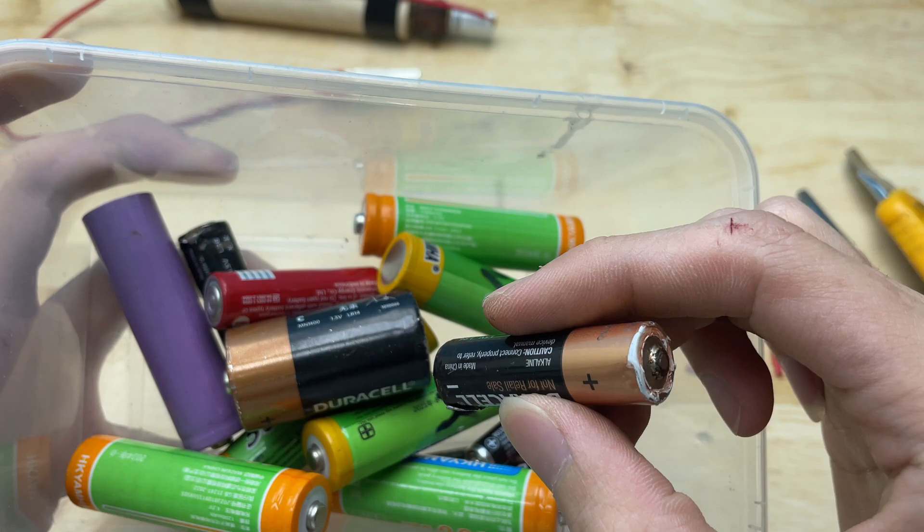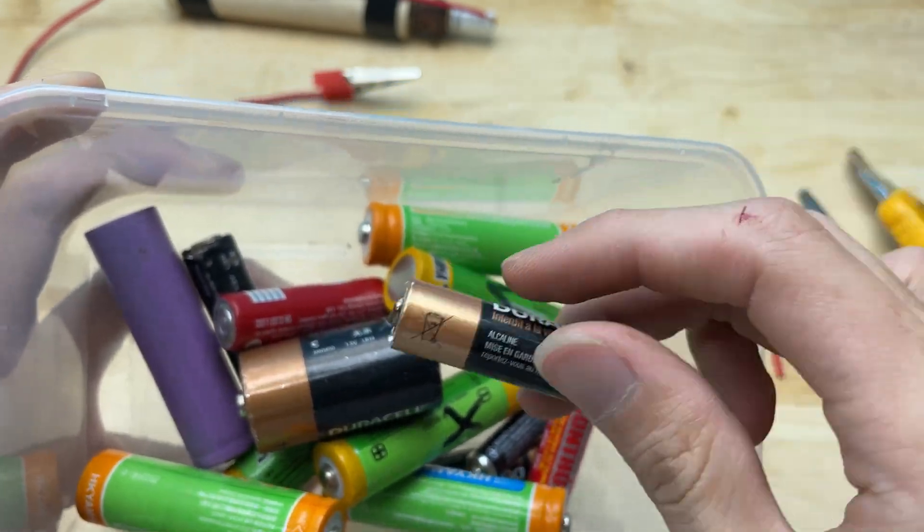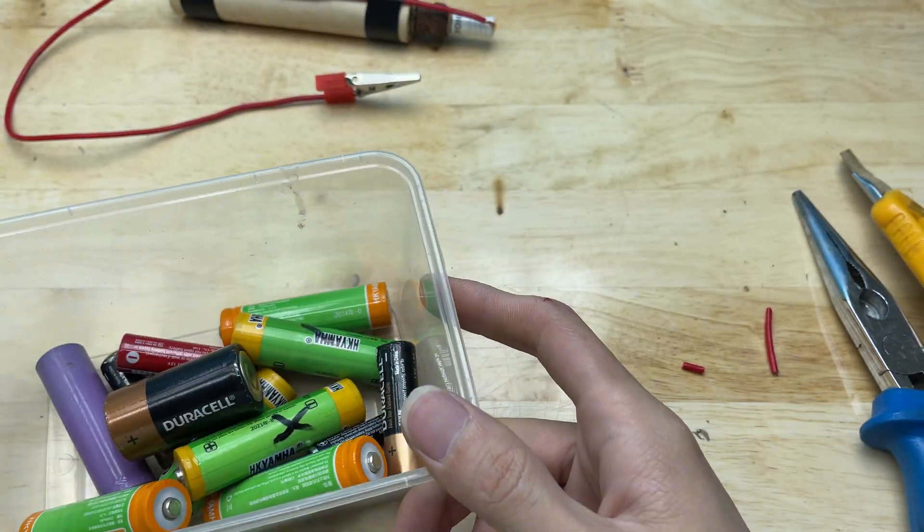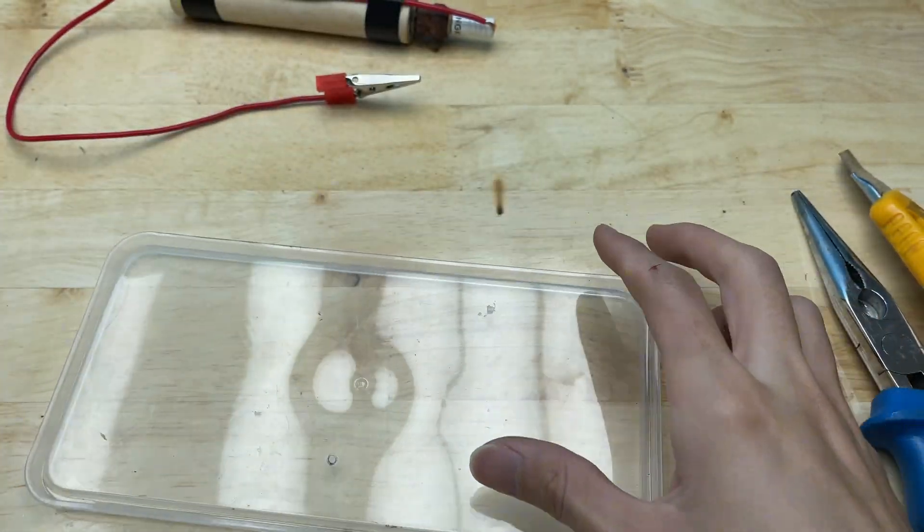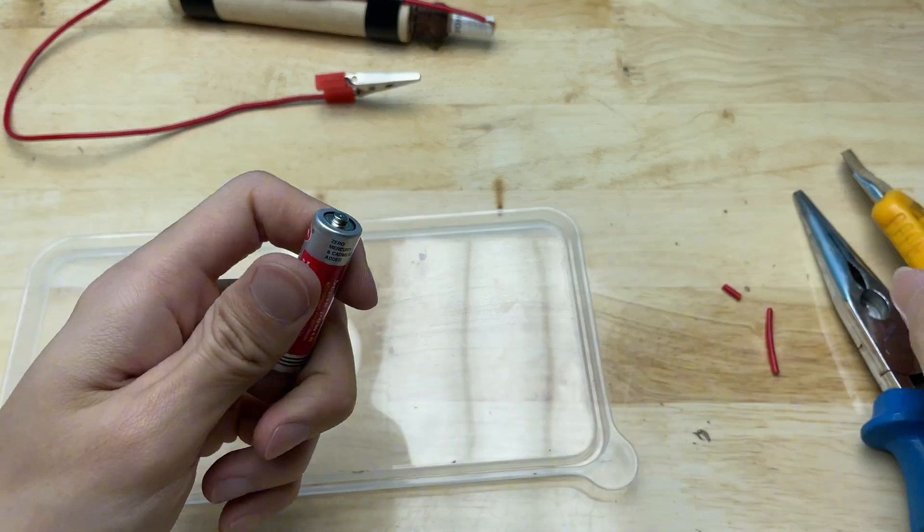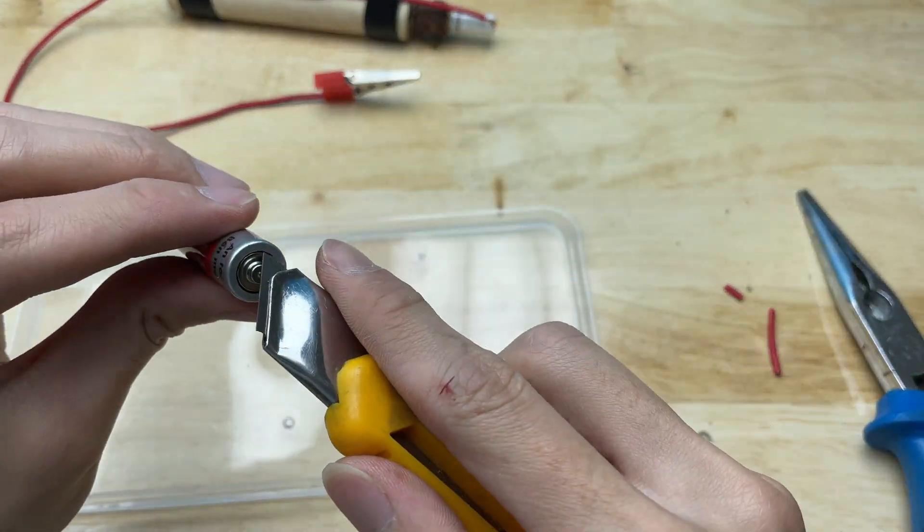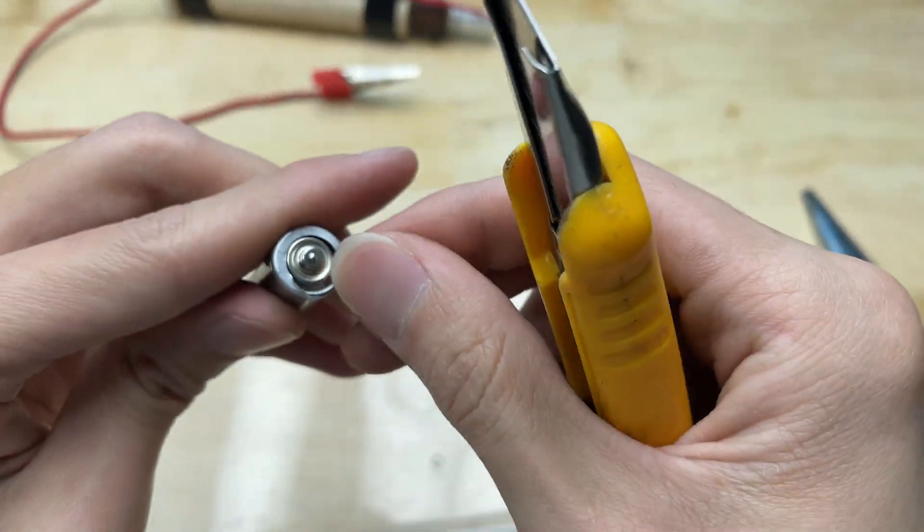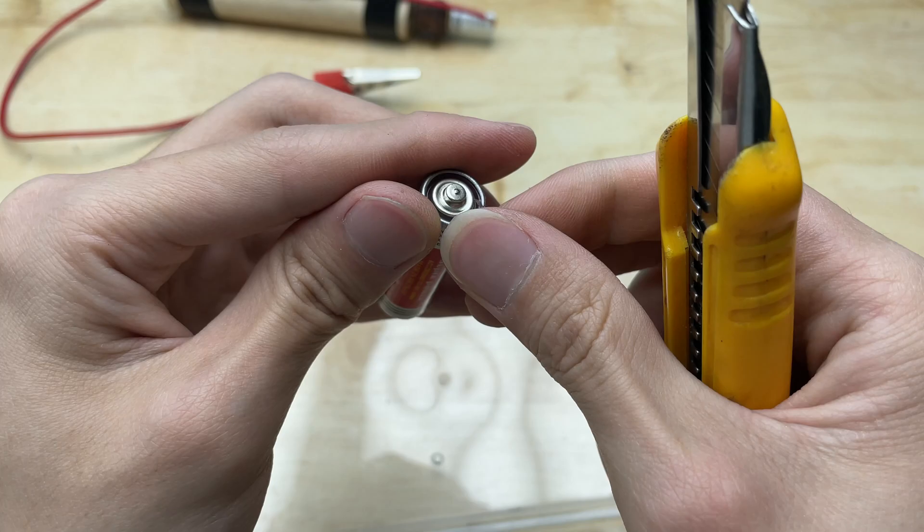Take an AA battery. Remove the casing of this battery. Peel off the casing and take out the core.